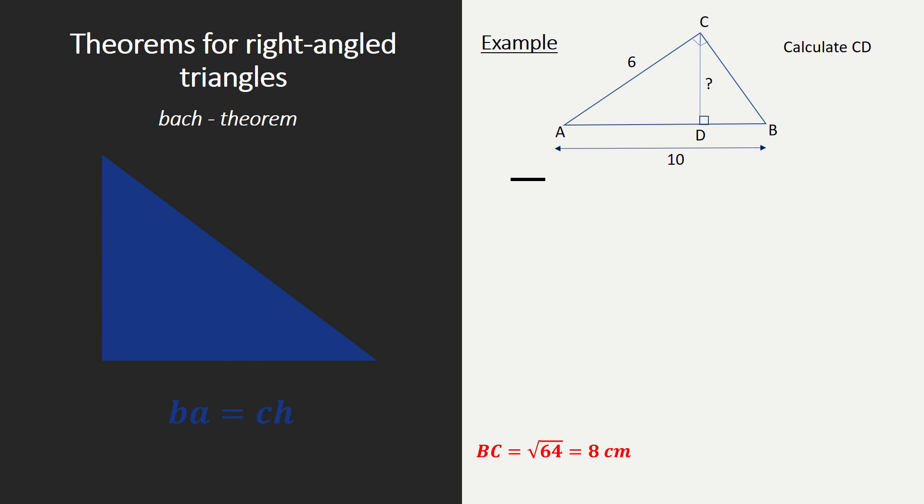And that's when we can use our Bach theorem. So what we have, and please remember, opposite to our C, so opposite to C is called our CH. Opposite to our A is called our AH and opposite to B is our BH. And our Bach theorem was BA equals CH.